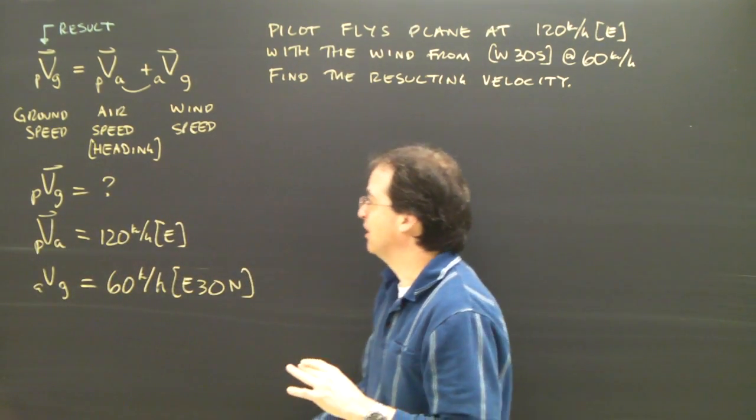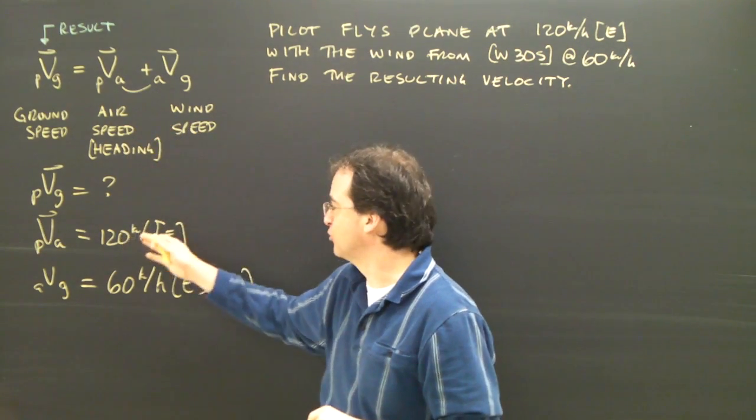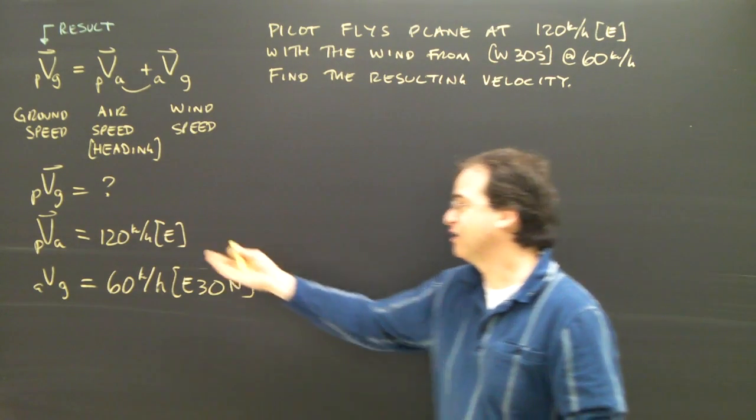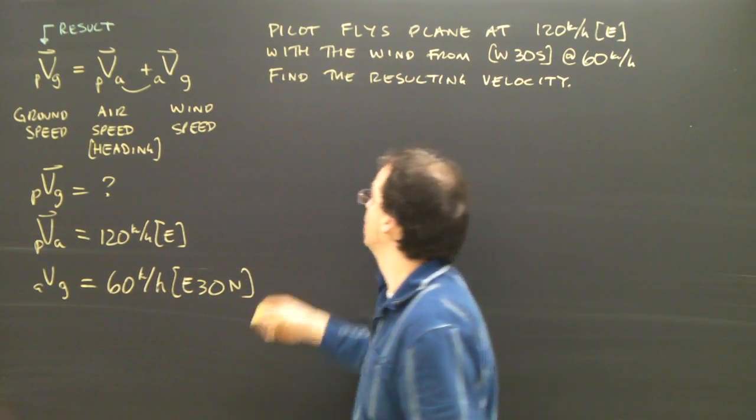you're actually pretty much done because it's a vector equation. Here are two vectors. Can you add them up? The fact that it's the velocity of something is irrelevant. I know how to add up two vectors. So let me do that.